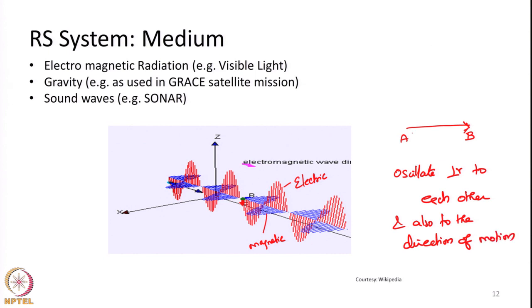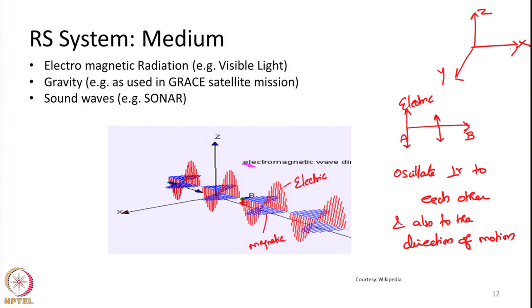They oscillate perpendicular to the direction of motion. That is, if the wave is travelling from point A to point B from left to right in this particular screen, the electric field may be vibrating in this particular plane — top to bottom — and the magnetic field may be vibrating within a plane going in and out of this particular slide. So each and every component will be perpendicular to each other. That is, if electric field is in the z direction and the wave is traversing in the x direction, then magnetic field will be vibrating in the y direction. Each one will be perpendicular to each other and also to the direction of motion.